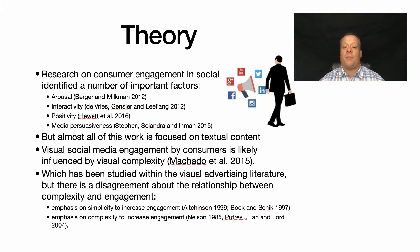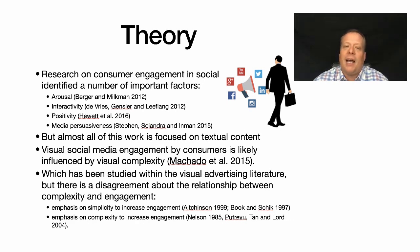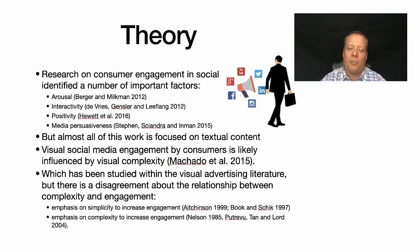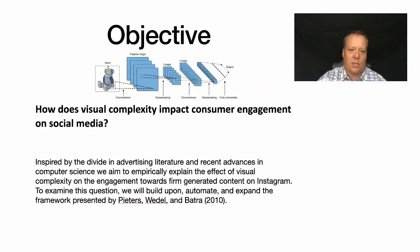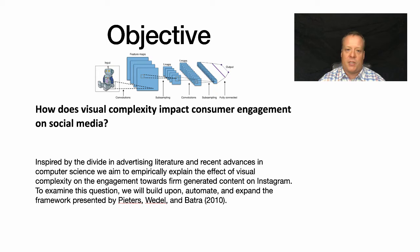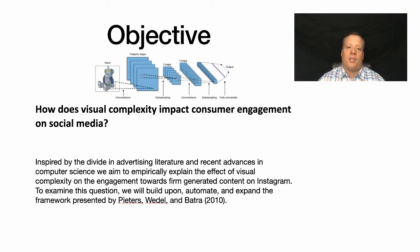Visual social media engagement by consumers is likely influenced by visual complexity. We know that the complexity of an image affects how well a consumer engages with it. But there's a contradiction in the literature — some work says simple images are easier to engage with, while other work says more complex images actually increase engagement. We decided to build upon, automate, and expand a framework presented by Peters, Weddall, and Batra, where they looked at how visual complexity affected consumer engagement with a small number of images, and we applied it to a huge number of images and automated the process.